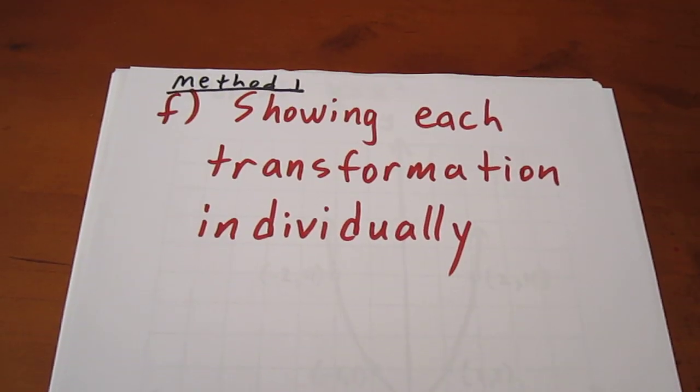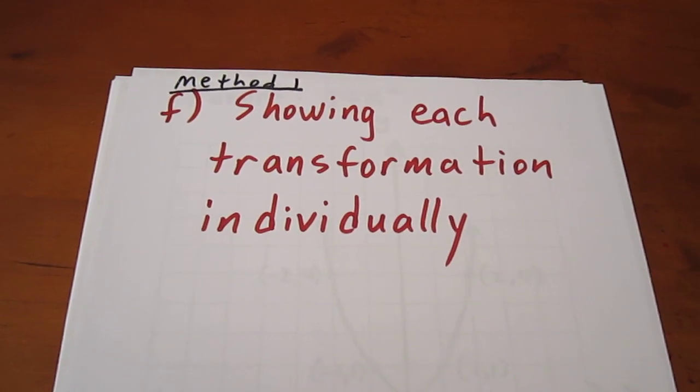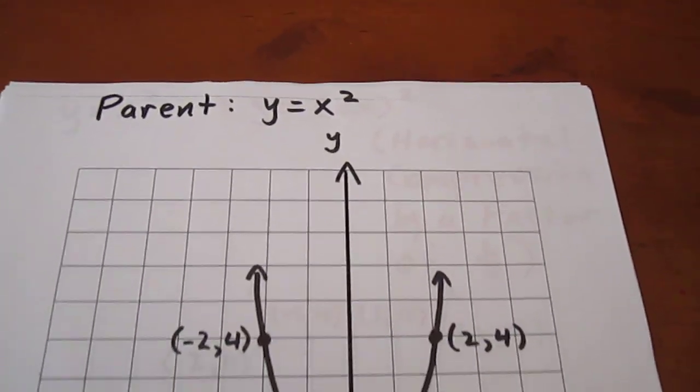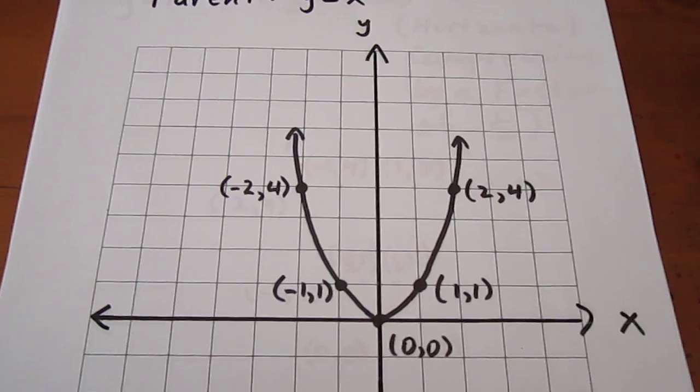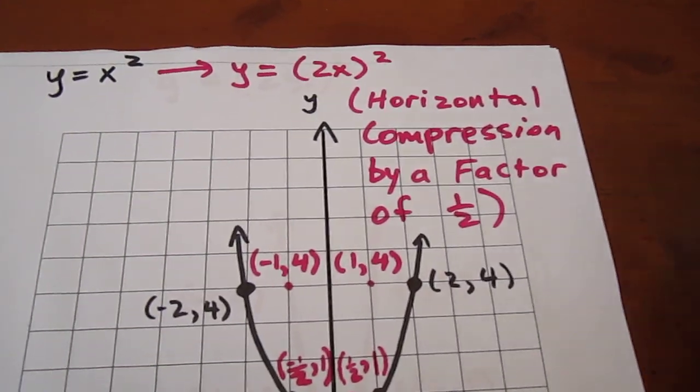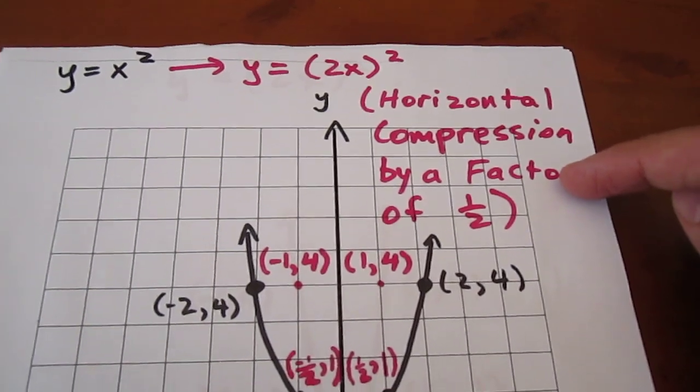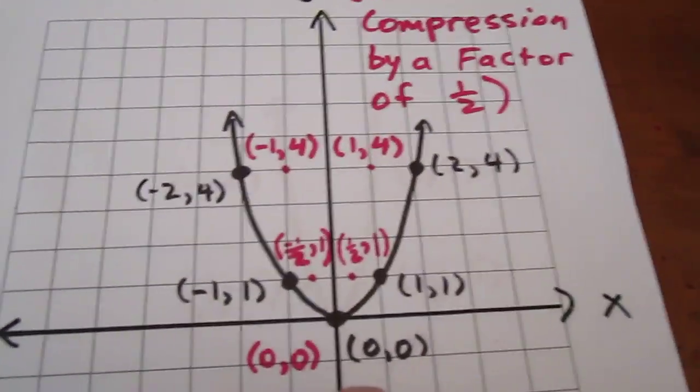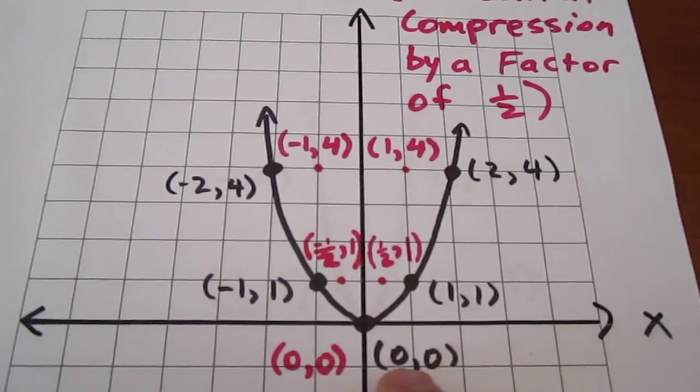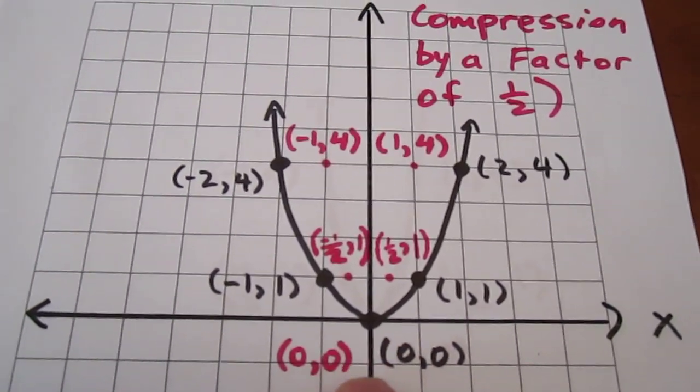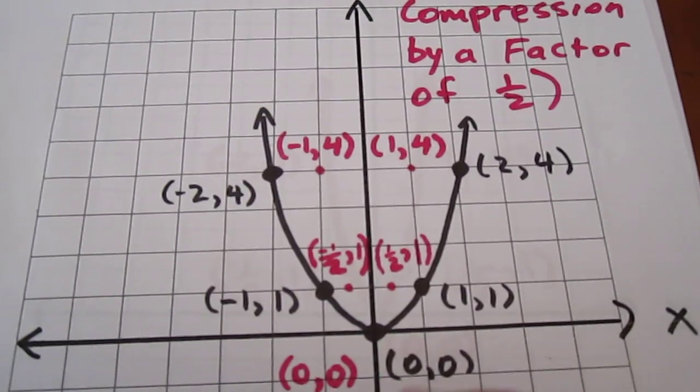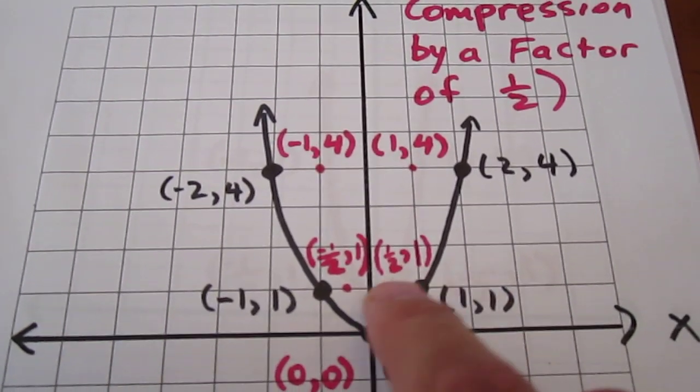We're then going to try to show each of these transformations individually. We begin with the parent function. The parent function is y equals x squared and it has these coordinate points. Our first job will be to show what happens when we have a horizontal compression by a factor of a half. What happens specifically is that we multiply each x-coordinate by one half in order to bring it twice as close to the y-axis. So 0, 0 stays 0, 0, but 1, 1 becomes 1 half 1.